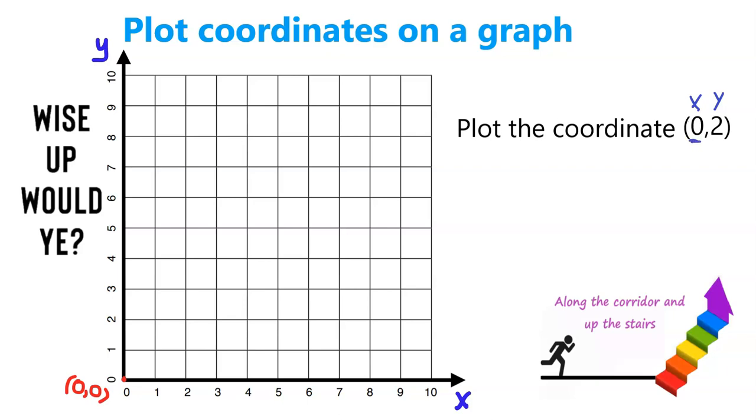This time we look at 0 and we go to the origin, but we don't move along the corridor because we're already at 0. So instead, we just move up the stairs and we move up the stairs 2: 1, 2. Now we can plot our coordinate. Our coordinate is on the y-axis: (0, 2).